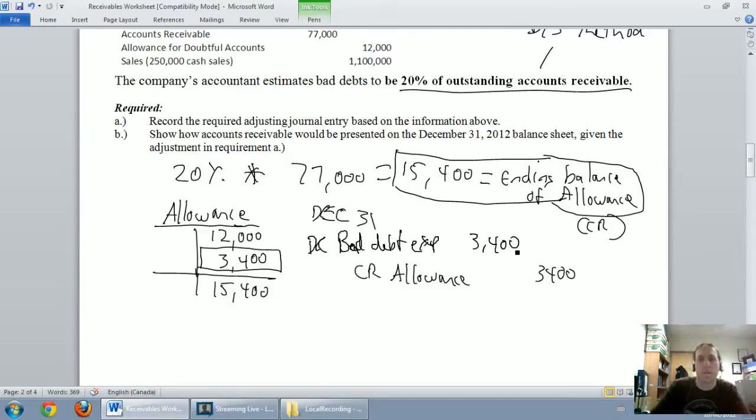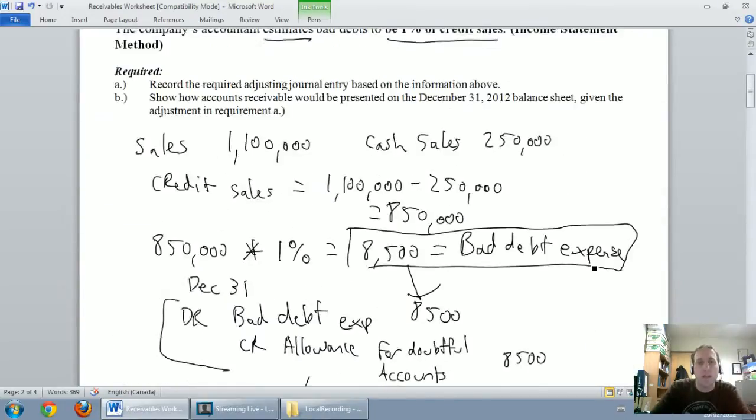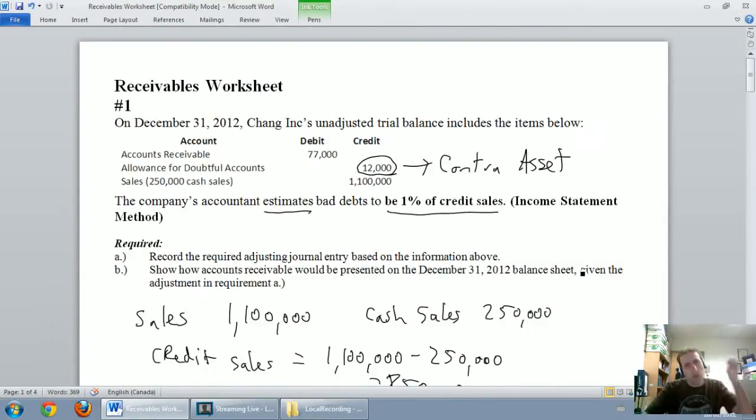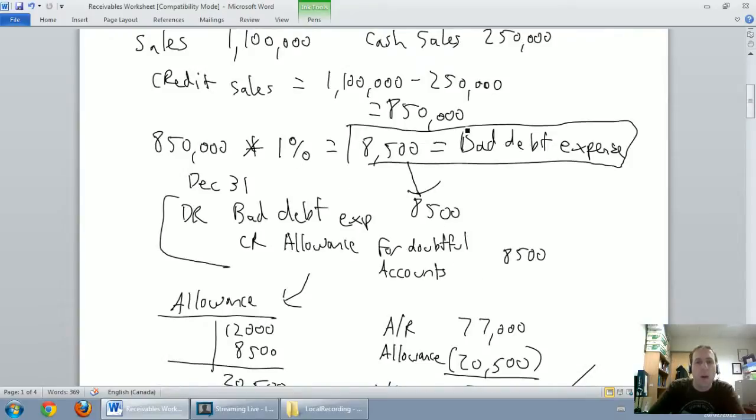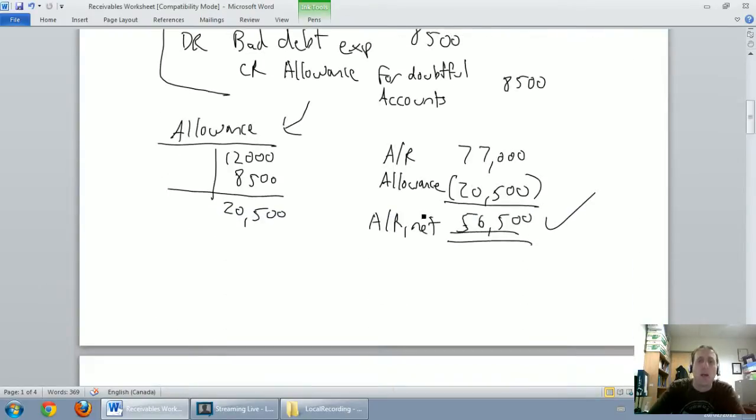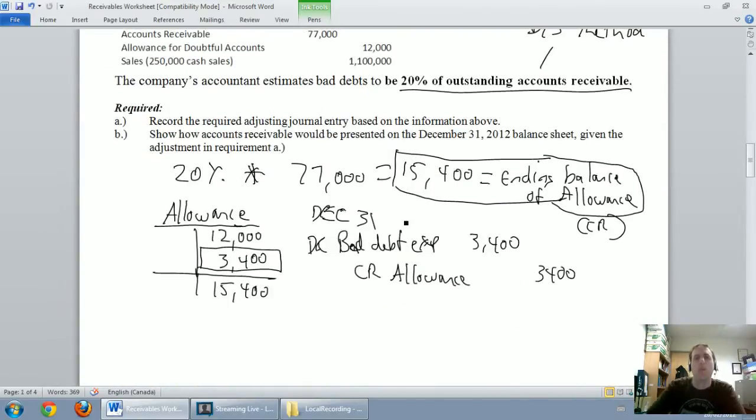So, just to reiterate the difference: when we're doing the income statement method, as we did in the video prior to this, we said the amount we calculate is our bad debt expense. Plug it into the journal entry. When we calculate based on a percentage of outstanding accounts receivable, that amount we calculate is the ending balance of our allowance for doubtful accounts. That amount needs to go into a T-account, and then we kind of work backwards to figure out our journal entry.